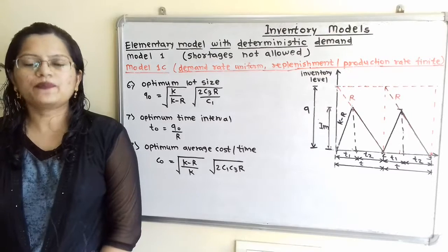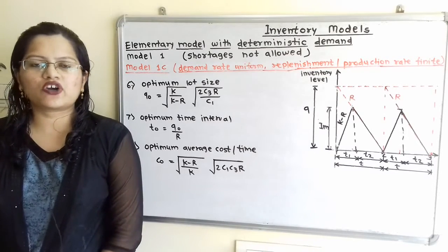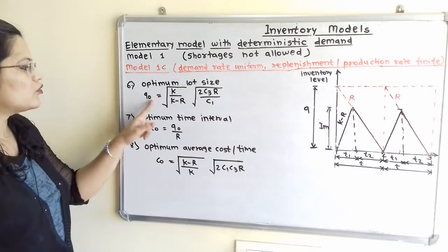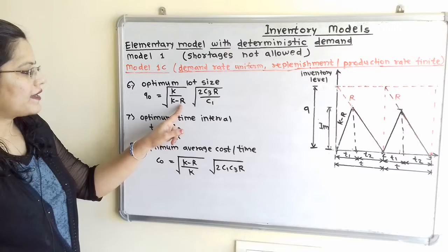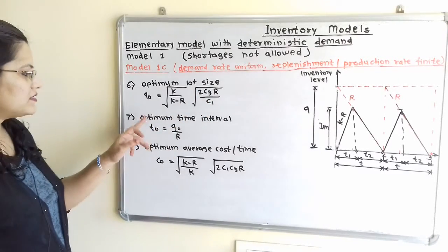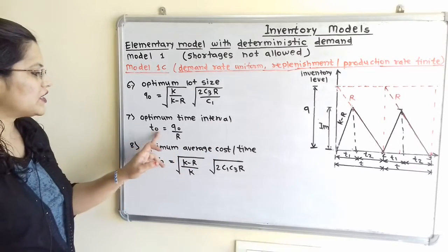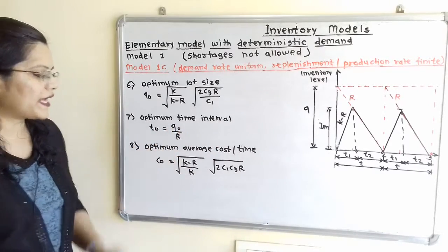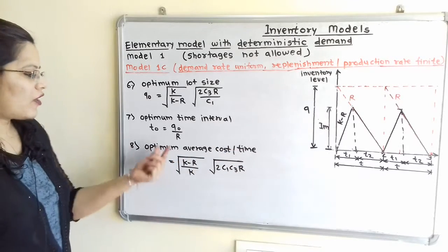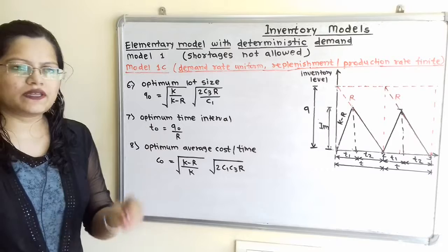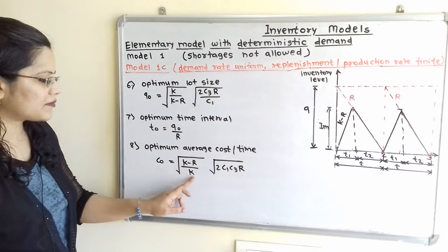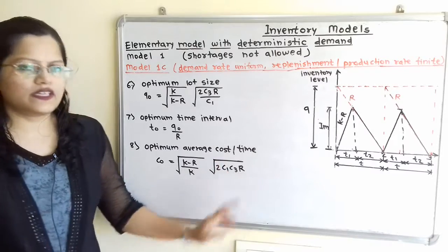The sixth formula gives the optimum lot size (also called Economic Order Quantity or Economic Lot Size): QO = sqrt(K/(K−R)) · sqrt(2·C3·R/C1). The optimum time interval is TO = QO/R. The optimum average cost per unit time is CO = sqrt((K−R)/K) · sqrt(2·C1·C3·R).